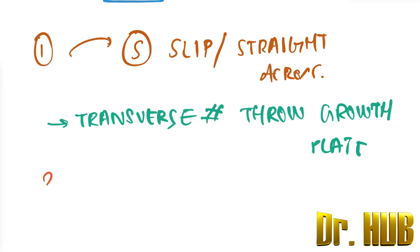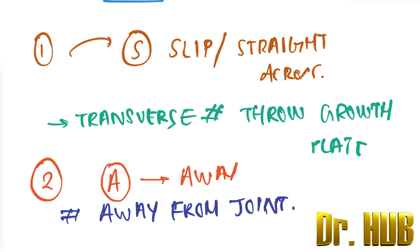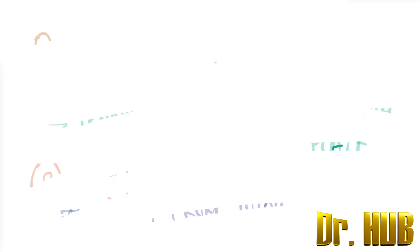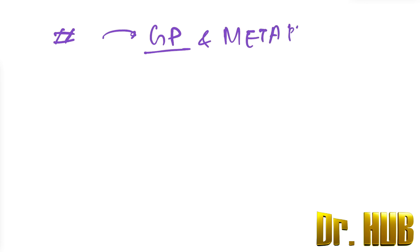Type 2 corresponds to the letter A in the mnemonic, standing for 'away.' The fracture lies away from the joint. The fracture passes through the growth plate and also through the metaphysis, but it spares the epiphysis.